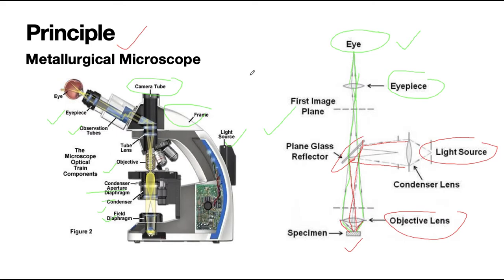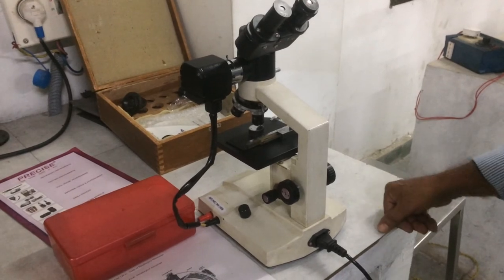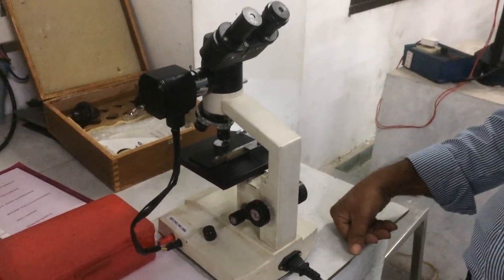So now we will have a look at one of the metallurgical microscopes which is available in our lab and it will be followed by the microstructure which has been shown using the same metallurgical microscope. Today we are conducting an experiment on metallurgical microscope study of the metallurgical microscope.